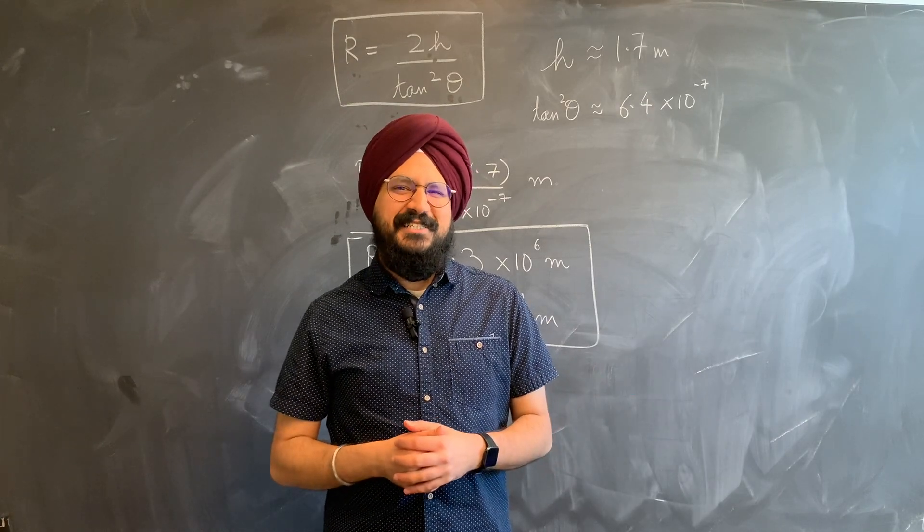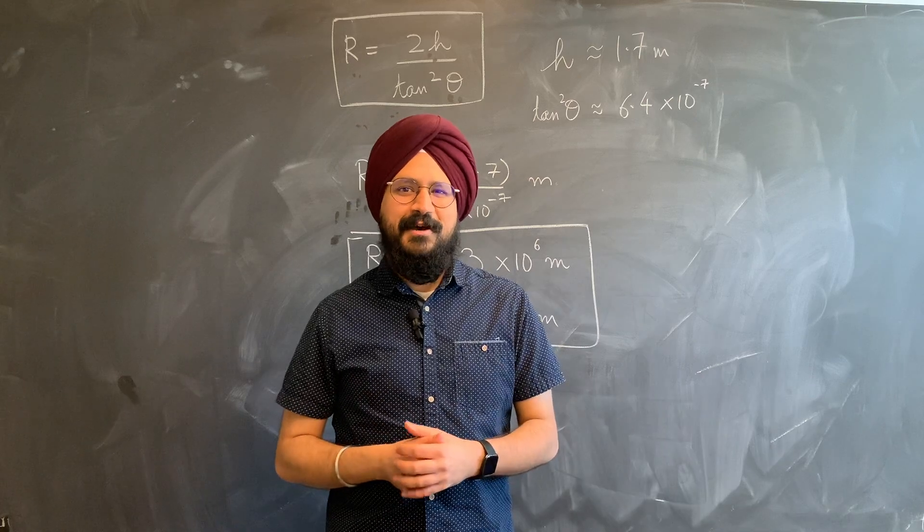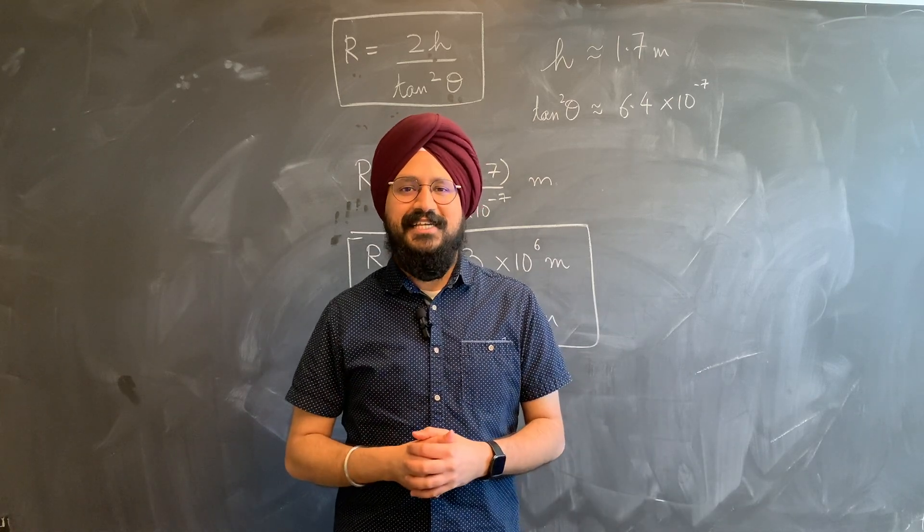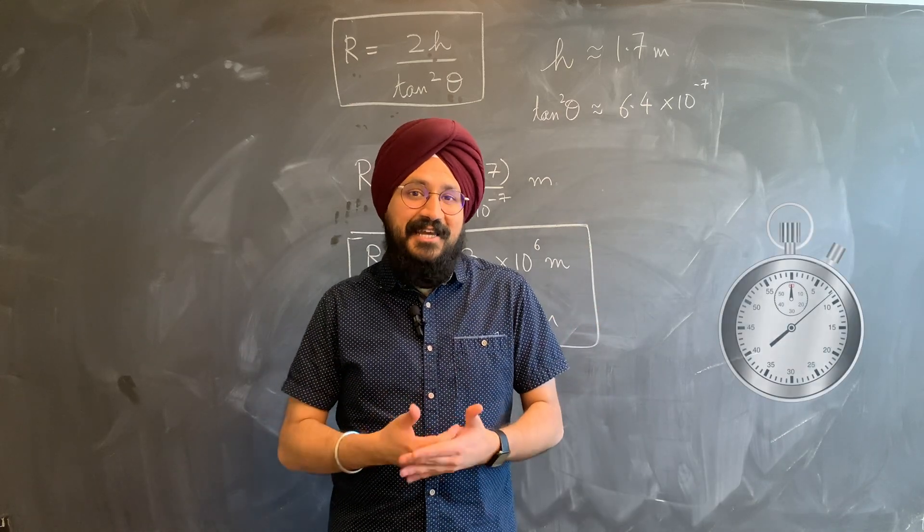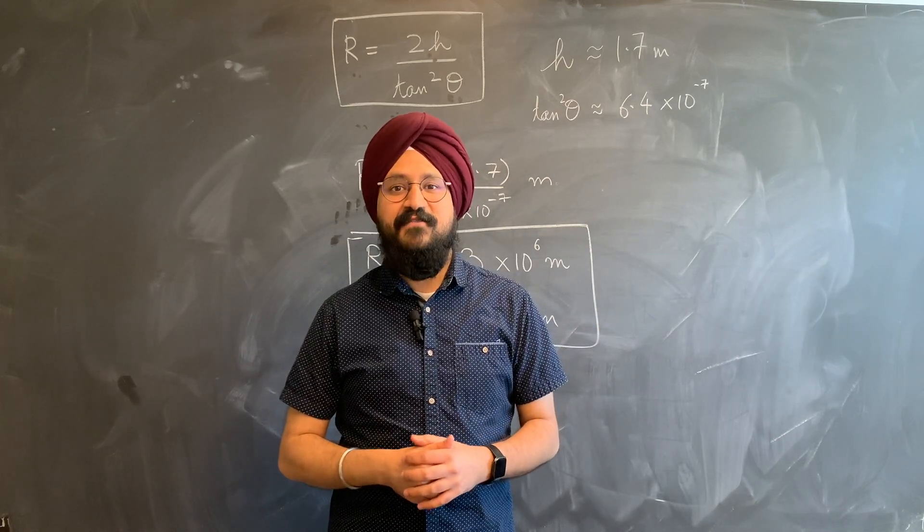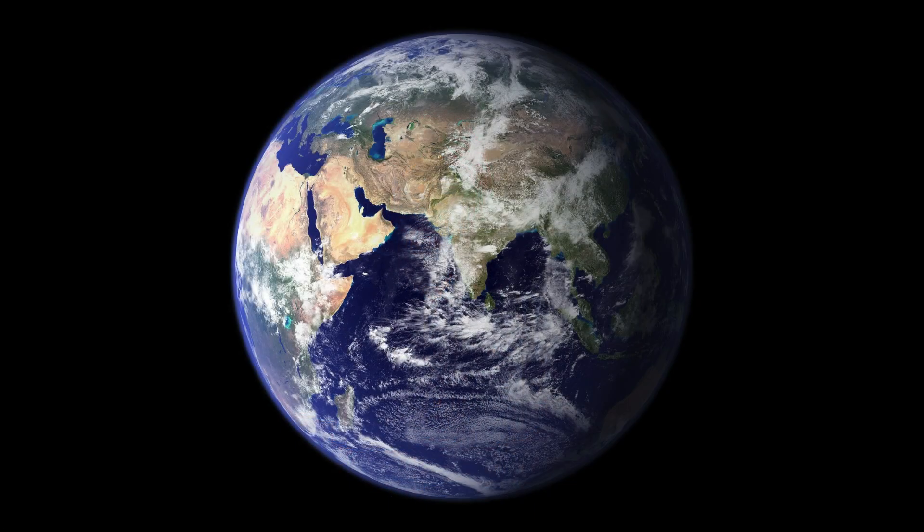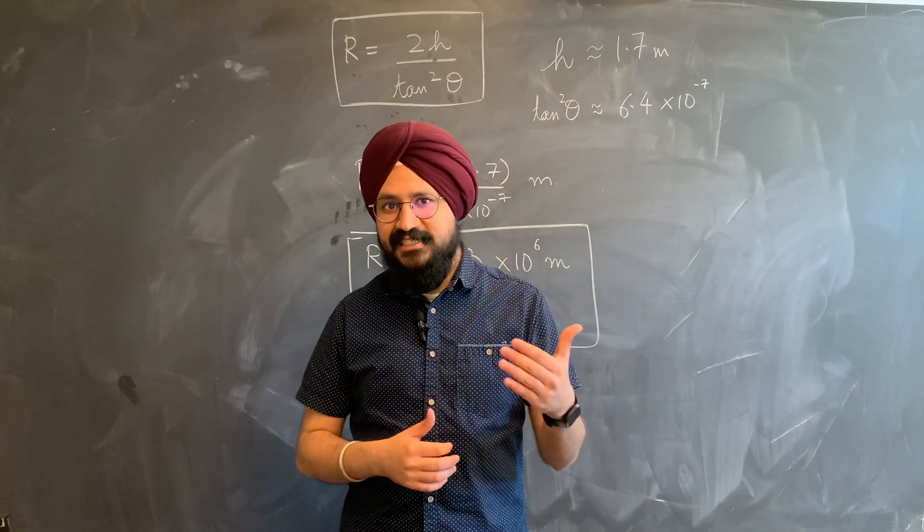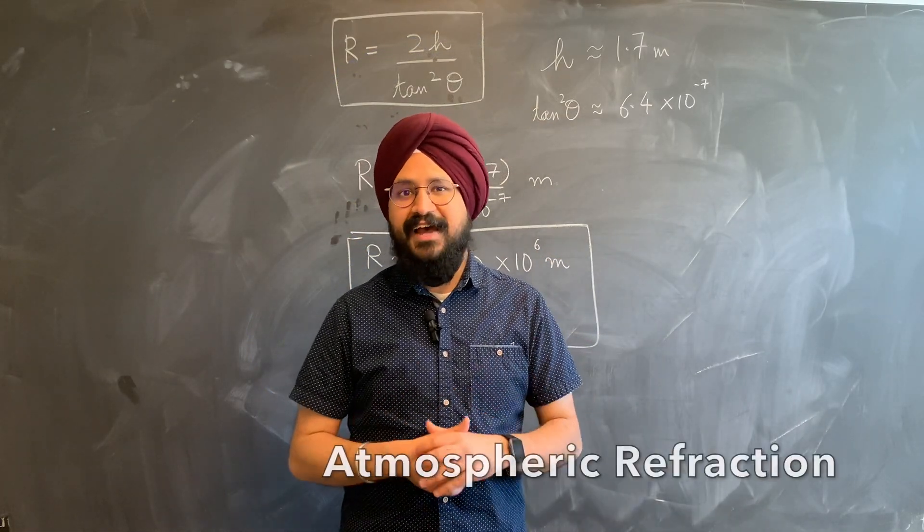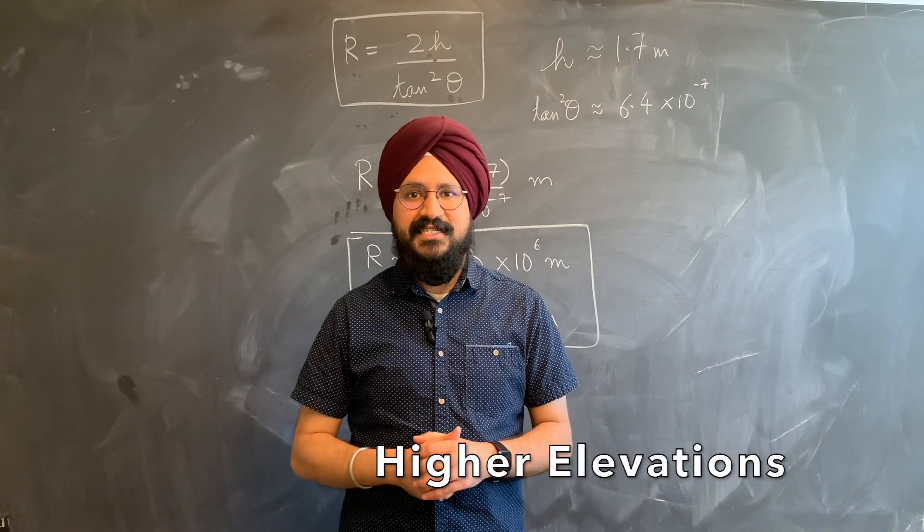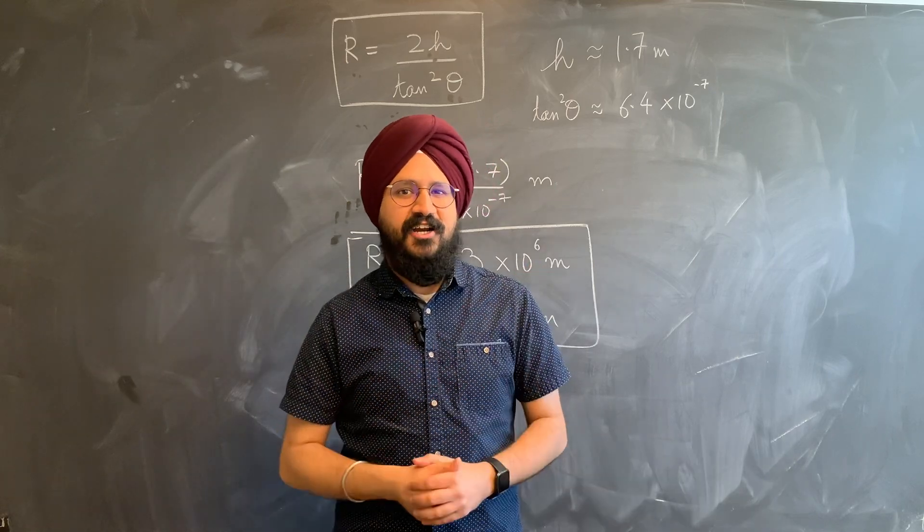Secondly, 20% may not seem as impressive. But think about it. Just by using very simple measurements like your height and the time interval between two sunsets, we were able to estimate something so different like the Earth's radius. You can improve upon this measurement by further taking into account effects of atmospheric refraction and also observing multiple such sunsets from higher vantage points. Give it a shot.